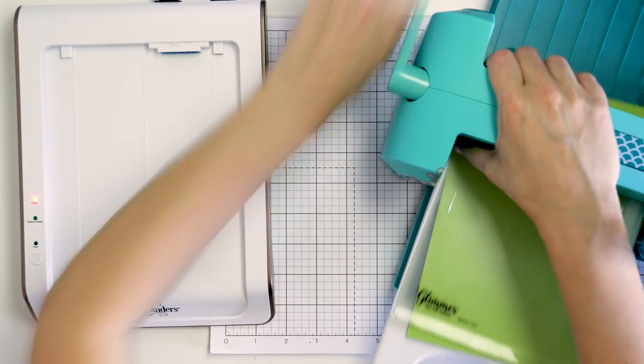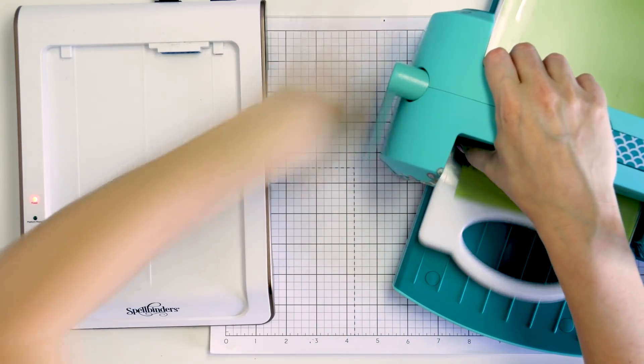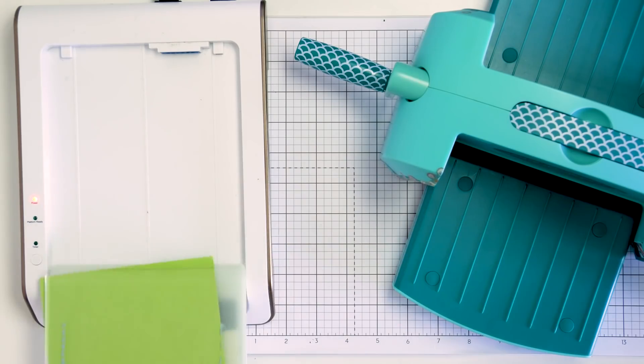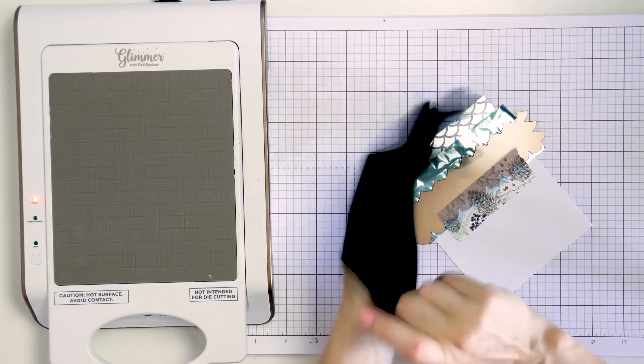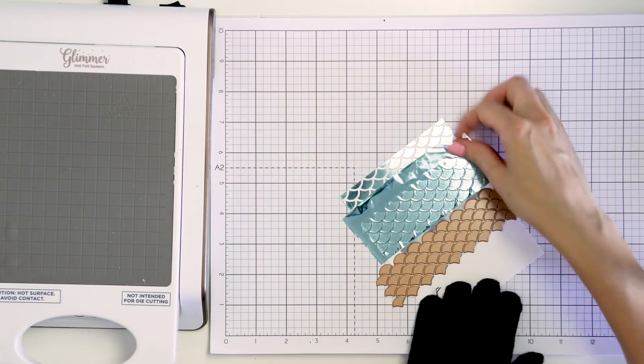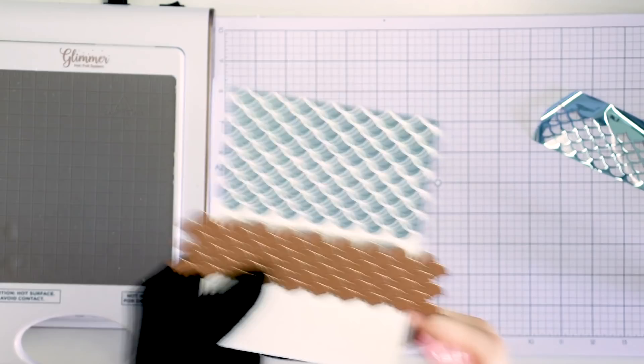The plate is hot, time to run it through the machine and foil. Nothing beats peeling the foil away and revealing that gorgeous foiled result. But first let's put the glove on so that we can handle the heat. Isn't this pretty?